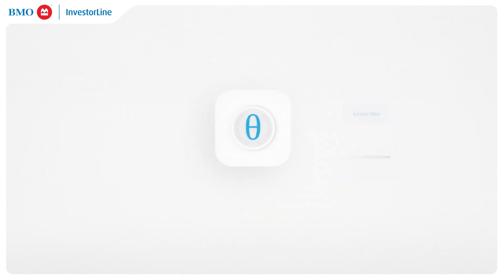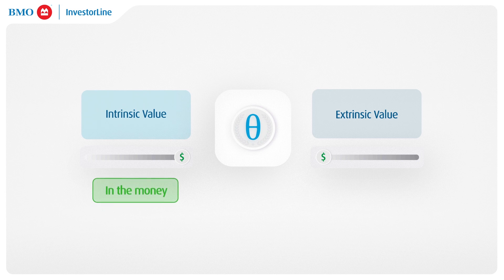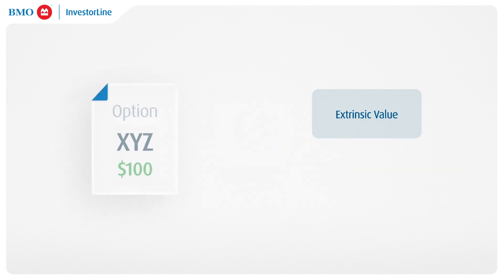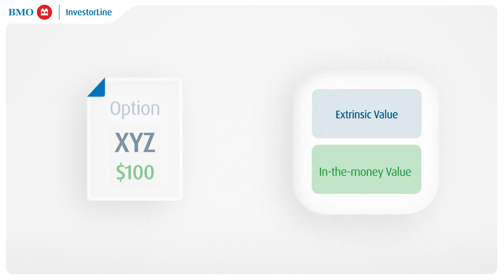It is also important to remember that Theta only erodes the extrinsic value of an option and not the intrinsic value, as the intrinsic value is dictated by how much the option is in the money. As a reminder, extrinsic value represents any excess premium of the executable or in-the-money value reflected in the options price.